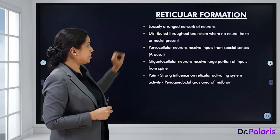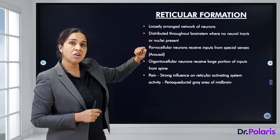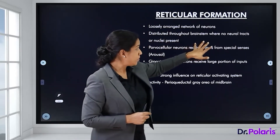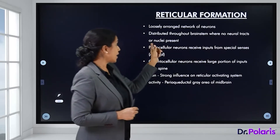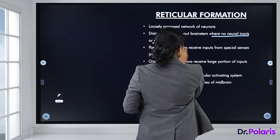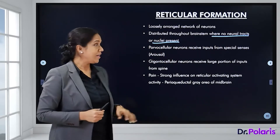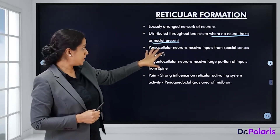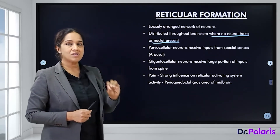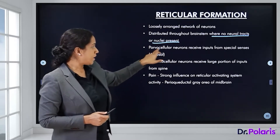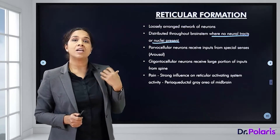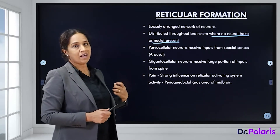The reticular formation is basically a network of loosely arranged neurons distributed throughout the brainstem where there are no neural tracts or nuclei present. The parvocellular neurons receive inputs from all the special senses, helping in the arousal mechanism of a person.